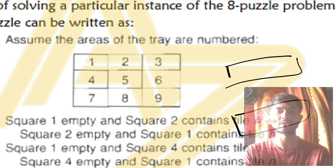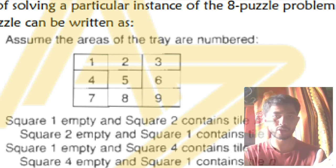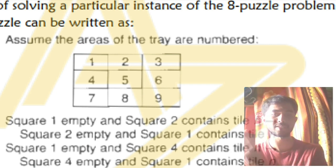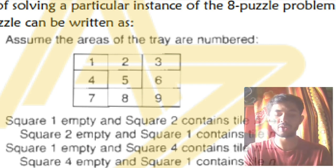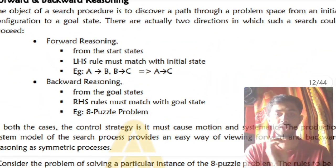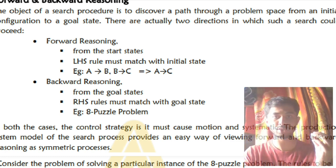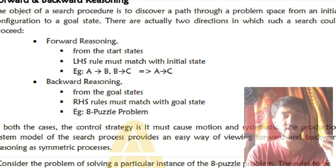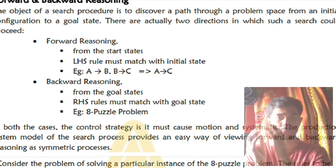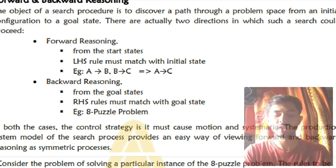On the other hand, in games like chess you are given the initial values and must reach the final state — giving checkmate to the opponent — which is called forward reasoning. In AI, if you have one start state and many goal states you use forward reasoning, and if there is one goal state and many starting states you use backward reasoning.